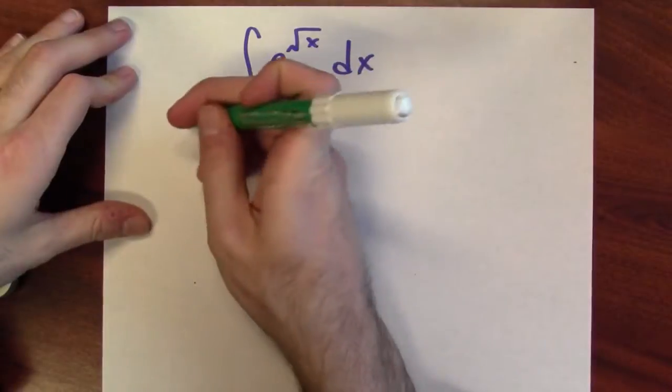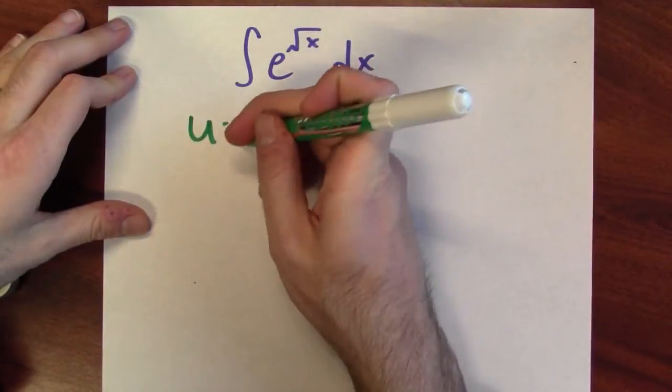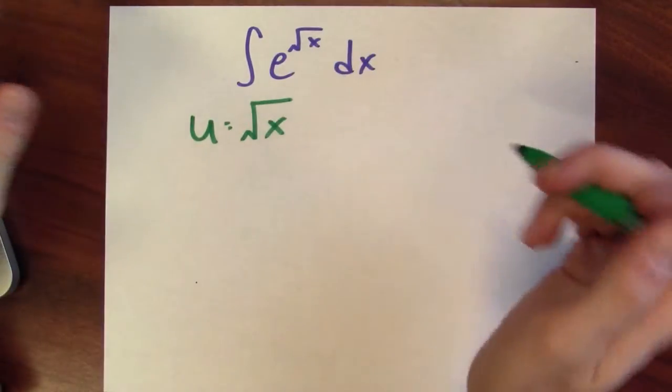We'll start by making a substitution that looks totally unjustified, but in retrospect, will turn out to be a brilliant move. Here's the substitution I'm proposing: let's set u equal to the square root of x. How does that change the integral?